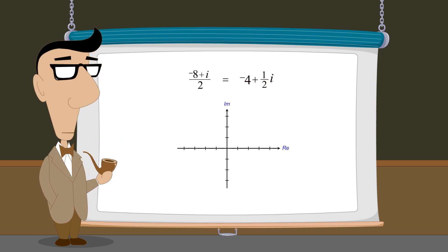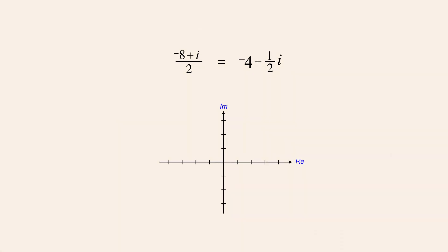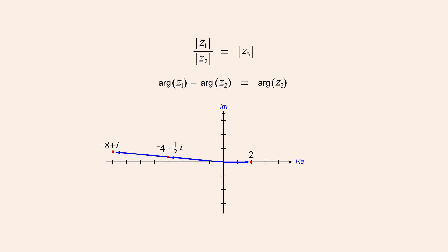Now let's see what this complex division looks like when we view these numbers as vectors. When we divide negative eight plus i by two, we get the quotient negative four plus one-half i. So let's see how this agrees with the vector relationships we just derived for complex division. In this example, z1 is negative eight plus i, z2 is two, and the quotient z3 is negative four plus one-half i.